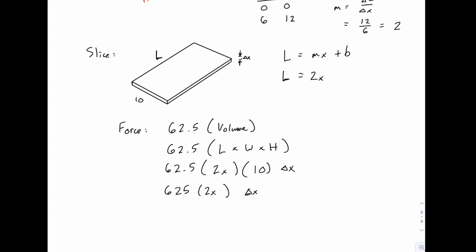Then, let me simplify a little bit and call this 625 times 2x delta x. And of course we could combine the 625 and the 2 as well. But it may be that the 2x in the integral will be simpler for us.